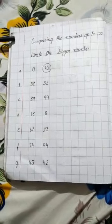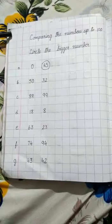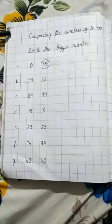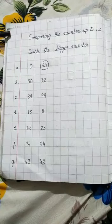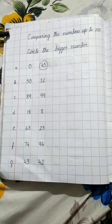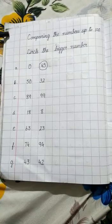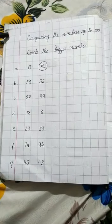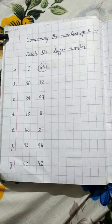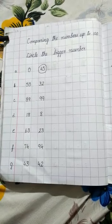Comparing the numbers up to 100. Circle the bigger number. Which number is bigger? 0 or 45 children? 45. Very good. Now circle the number 45. In the same way, complete all the sums.